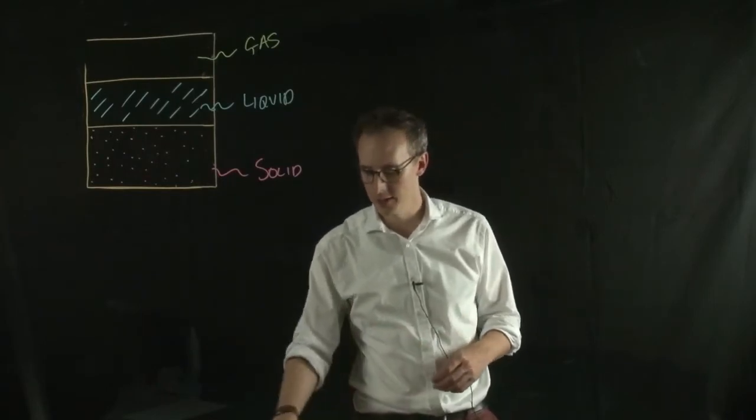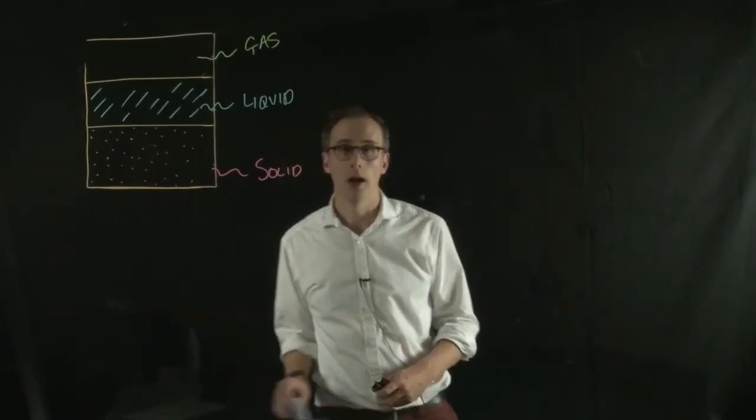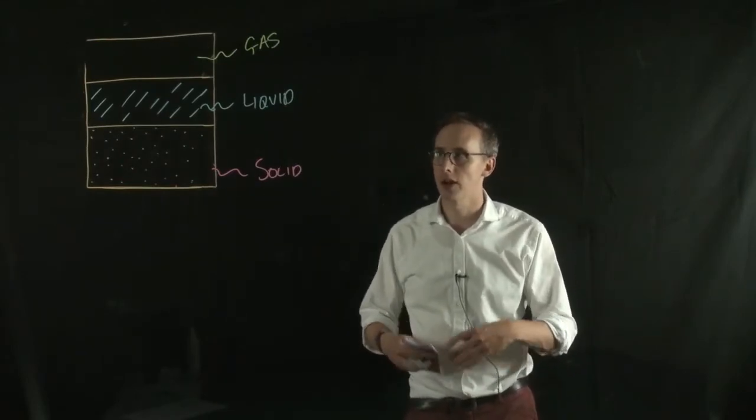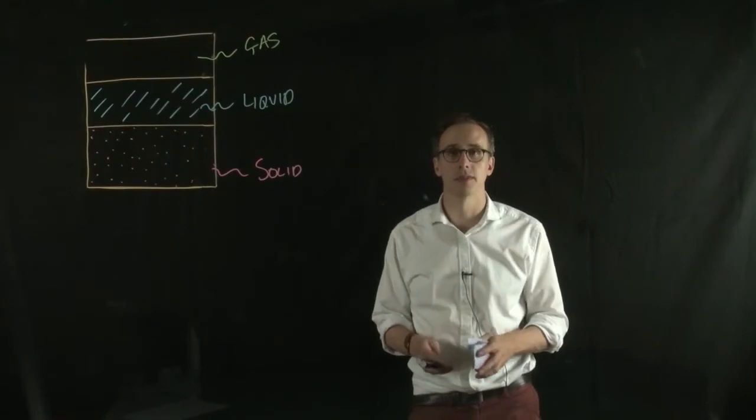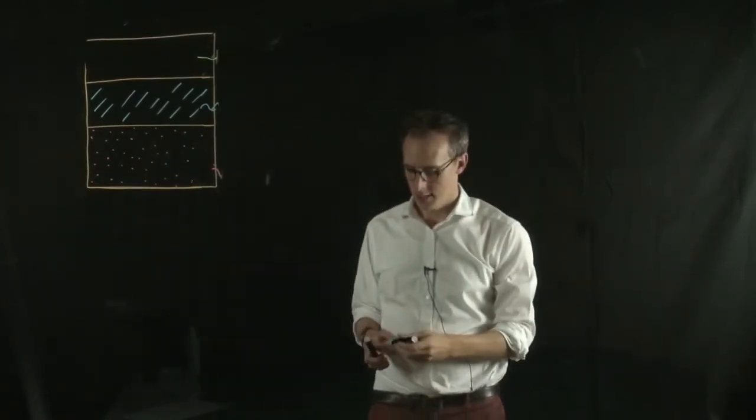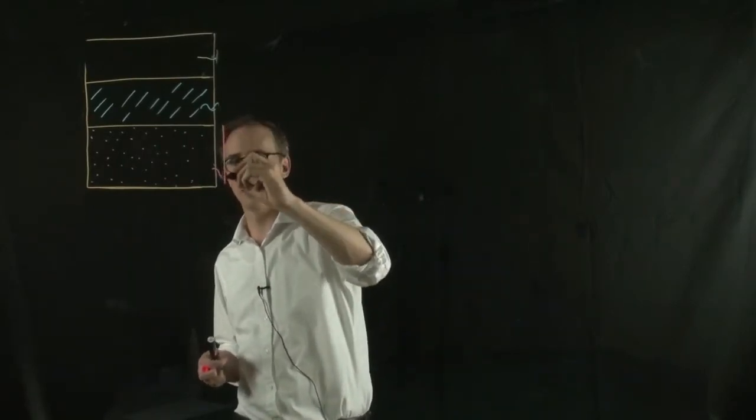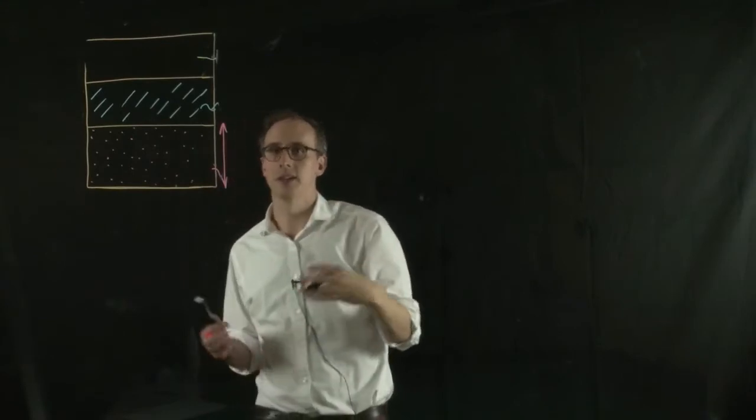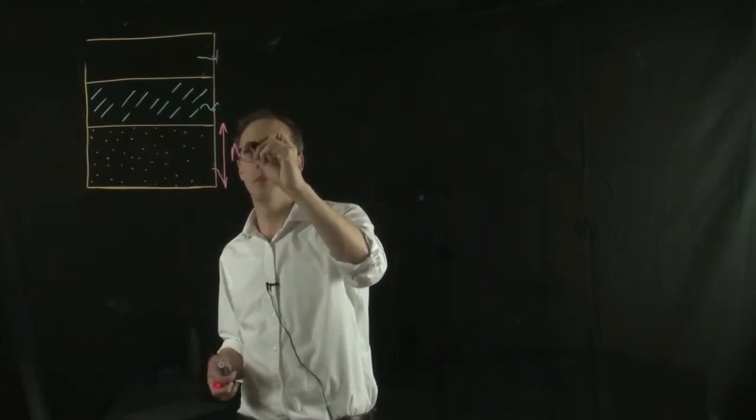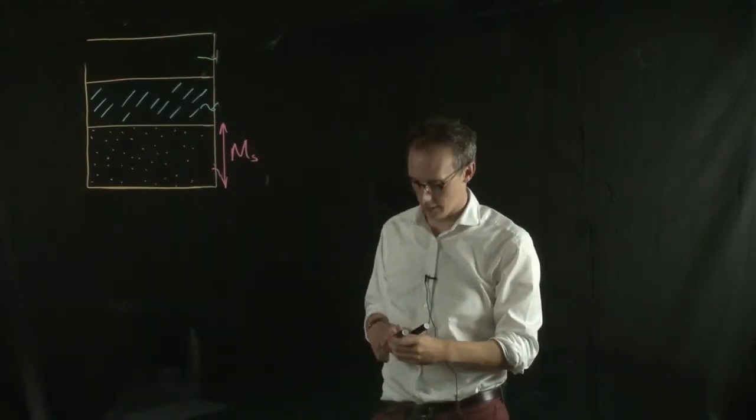So what do we know about these three phases? Well, we know that they all have a mass and they all have a volume. So let's describe these three phases in terms of their mass and volume. So let's get rid of this and let's talk about their mass. So the solid phase has a mass and we can describe that in terms of a parameter. So instead of writing mass of solid, we can just write M for mass and subscript S to denote the solid phase.